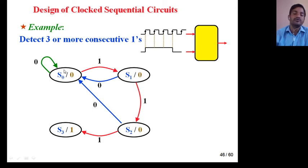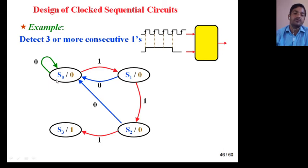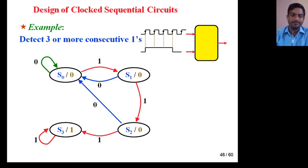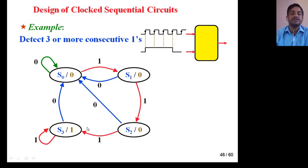Now from S3 there are two possibilities. If x equals 0, it returns to S0 because we need three or more ones — one one one, or one one one one, or even five ones. But if x equals 0 we go back to S0; if x equals 1, it remains in S3. So after every zero, we return to the initial state. This completes the sequence detector for three or more consecutive ones.